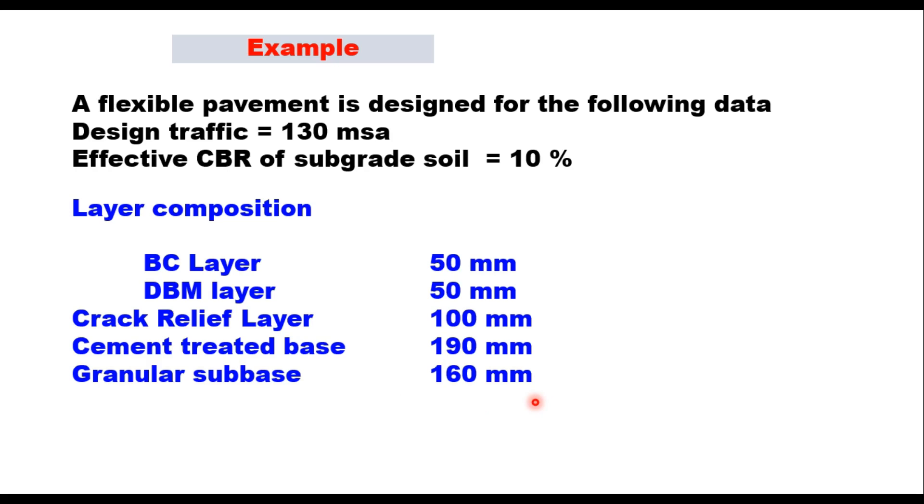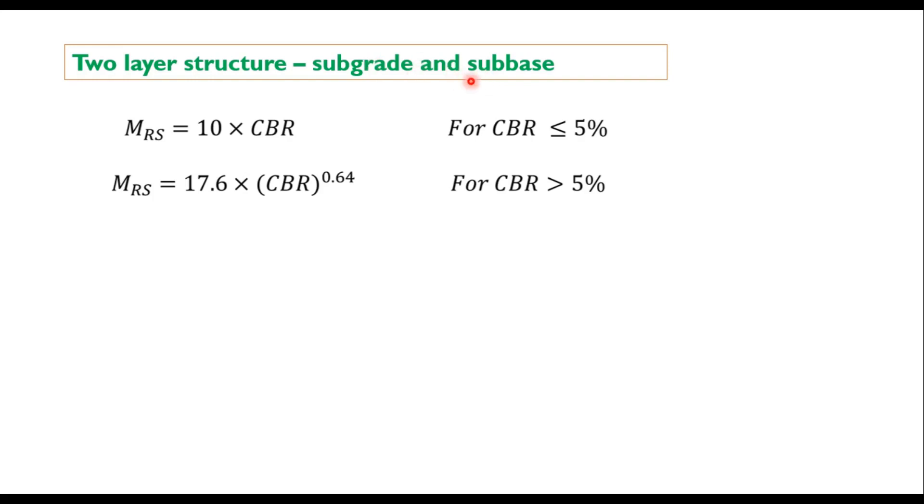To take construction traffic while constructing cement treated base layer. And therefore let us check the adequacy of this subbase layer. So let us now consider a two-layer structure: a subgrade and above that you have the layer of subbase. Calculate Mr value. Mr value of subgrade is given by this equation: if CBR is less than 5 percent, you use this equation; if it is more than 5 percent, use this equation. In the present case, CBR is 10 percent, and therefore we use the second equation, and that is the Mr value of subgrade 76.83 MPa.